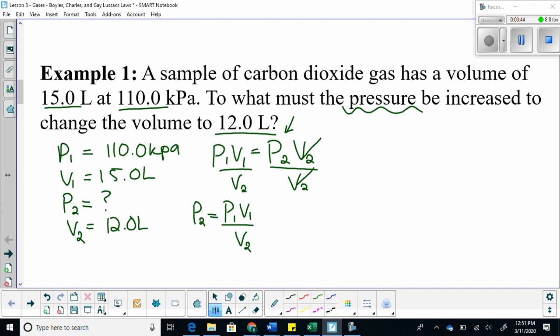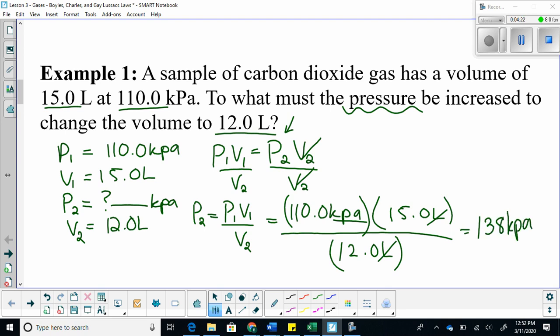From here, we sub in the values. 110 kilopascals multiplied by 15 liters divided by 12 liters. Cancel your units. Liters cancels out with liters, and I am left with kilopascals. Does this make sense? Yes, it does, because we are looking for pressure, which will be measured in a unit of pressure. When you plug this into your calculator, you will get an answer of 138 kilopascals. Let's get used to boxing our final answer: 138 kilopascals.